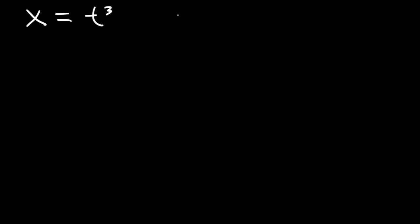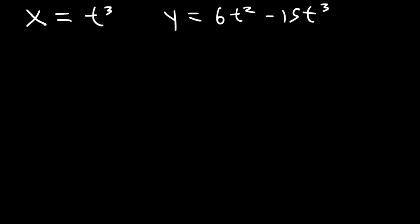Now it's your turn. Let's say that x is equal to t to the third power, and y is equal to 6t squared minus 15t to the third power. Go ahead and find dy/dx. So first, let's find dx/dt. The derivative of t to the third is 3t squared.